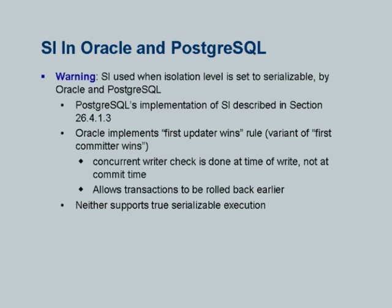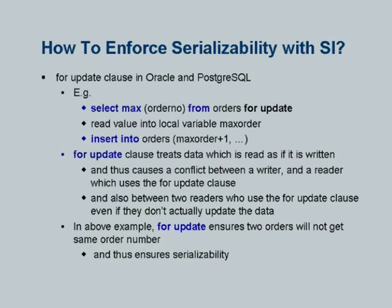Oracle implements the first updater wins variant of first committer. Both Oracle and PostgreSQL implement snapshot isolation when you set the isolation level. In SQL Server, they recently introduced snapshot isolation as an option — you can say set isolation level to snapshot and then it will run snapshot isolation.